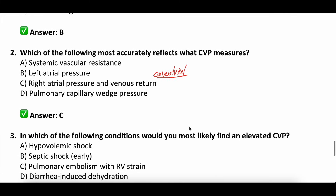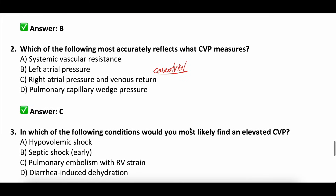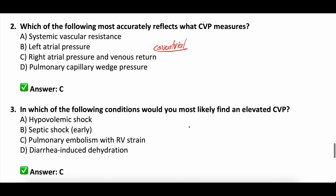Question number three: in which of the following conditions would you most likely find an elevated CVP? A: hypovolemic shock, B: septic shock, C: pulmonary embolism with RV strain, or D: diarrhea-induced dehydration. The correct answer is C — pulmonary embolism with RV strain. Anything causing severe hypovolemia (diarrhea, hypovolemic shock, early septic shock) causes a low CVP. Whereas a PE with RV strain causes a high CVP because the right heart is struggling with pressure overload, pumping against significant right ventricular afterload from the pulmonary embolism.